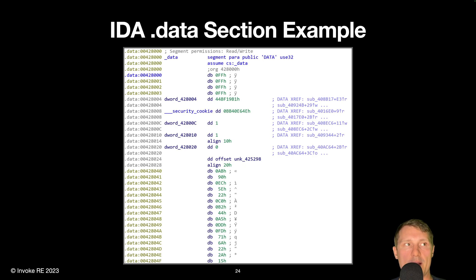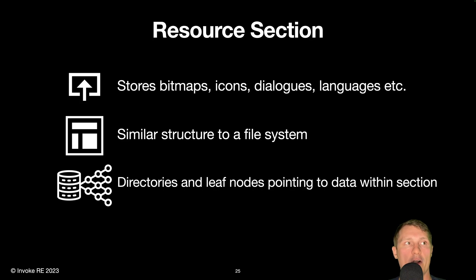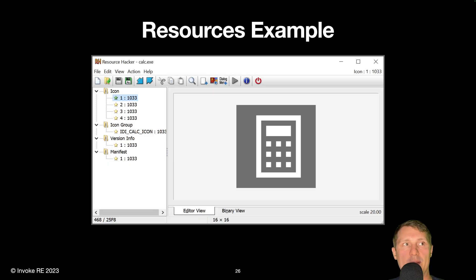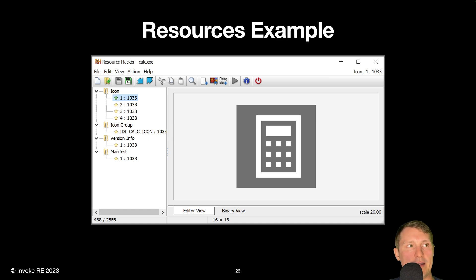Here's an example of a .data section, which contains initialized data that is used by the program at runtime. The resource section stores multiple types of data used by the PE at runtime, including bitmaps, application icons, dialogs, strings, etc. These resources are laid out in a similar manner to a file system with directories and leaf nodes, which point to data stored within the resource section. Resource Hacker parses the image resource directory and image resource directory entry structures to acquire resource data. Each tree structure provides subdirectories which distinguish the resource type, a numeric string or resource identifier, and a numeric language identifier for each resource, such as 1033 for English. The highlighted example here is an icon from the Microsoft Windows calculator application stored within the PE.